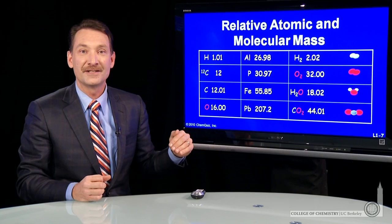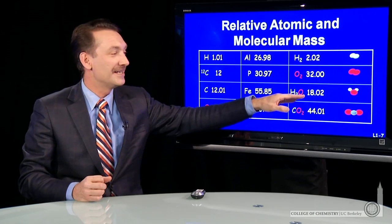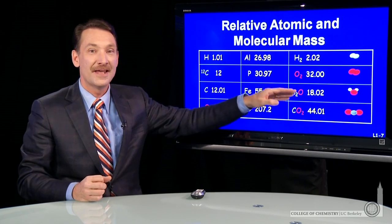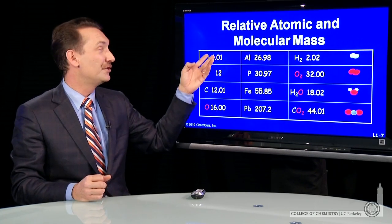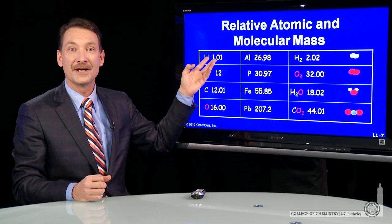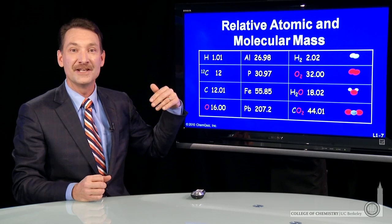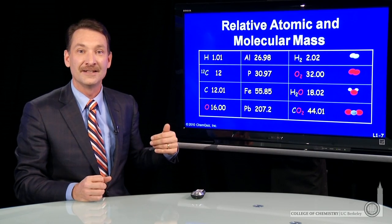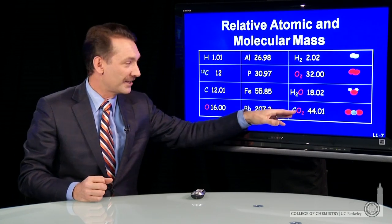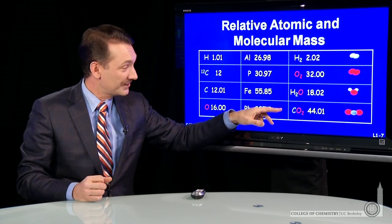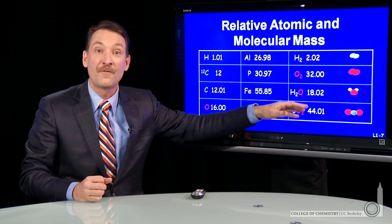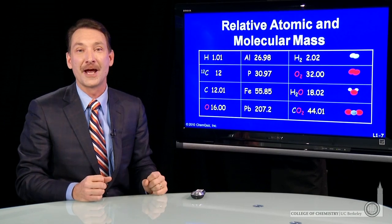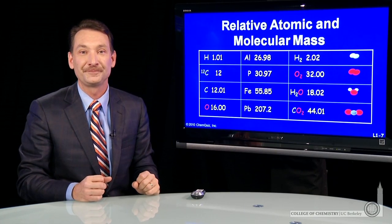Water has relative mass 18: that's one oxygen at 16, and two hydrogens at one each, giving 18. And carbon dioxide is the sum of carbon and two oxygens: 44 grams per mole.